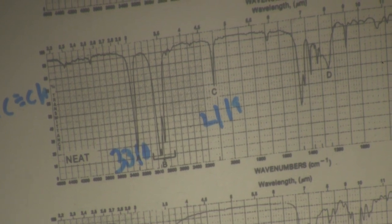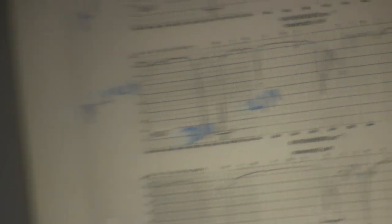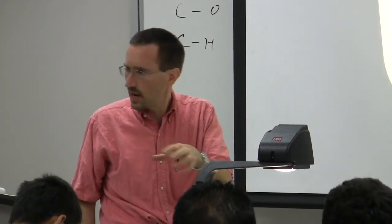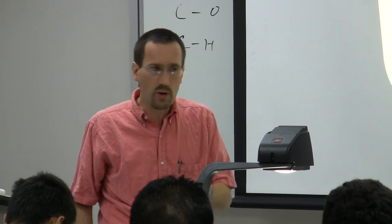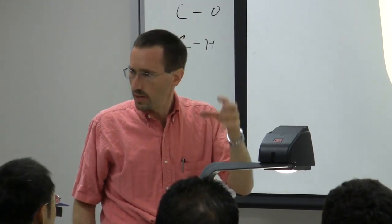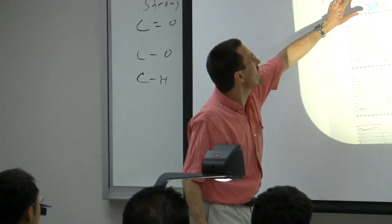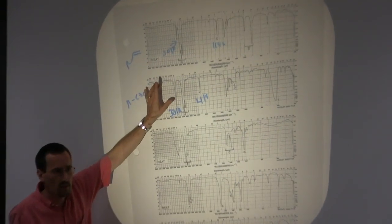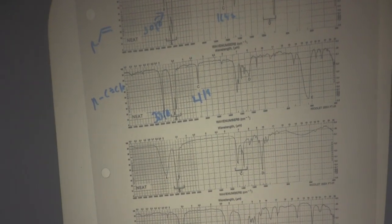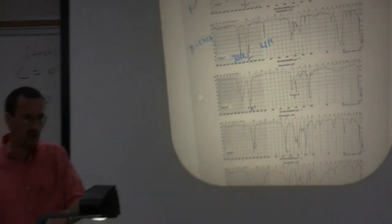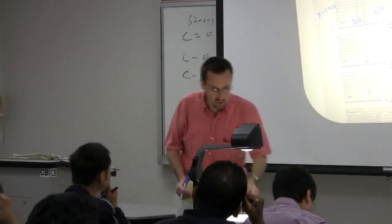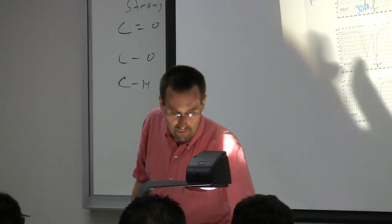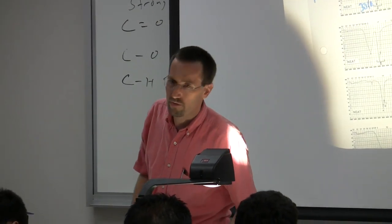Alcohols in general will be broad. In pure form, alcohols tend to hydrogen bond to each other. If very dilute, they tend not to hydrogen bond, but then appear at about 3,400–3,500 cm⁻¹. If the alcohol is very sterically hindered — like a tertiary alcohol — you'll have less hydrogen bonding than a primary alcohol, and you may see a monomeric band. The monomeric bands are going to be about 3,400–3,500 cm⁻¹.